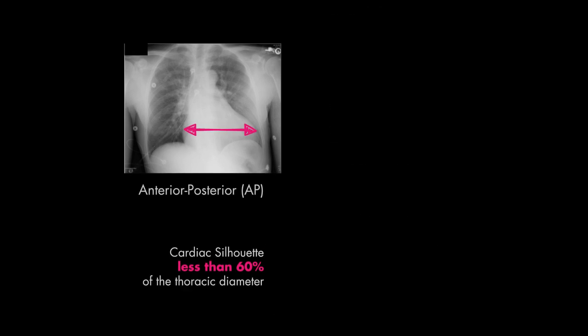Remember that on an AP film, the heart will seem artifactually larger because of the way the film was shot. If you haven't already seen the video on chest x-ray positioning and views, you could check it out by clicking the link for part 4 of this video series in the description below.